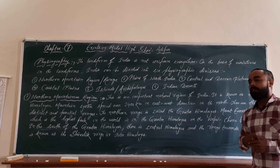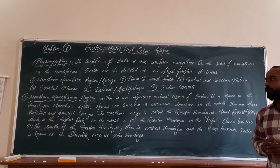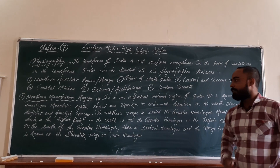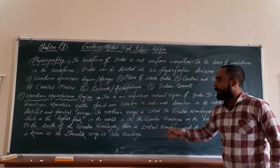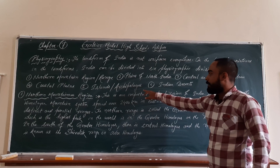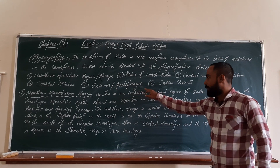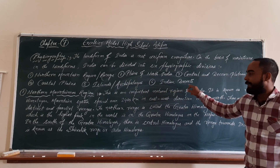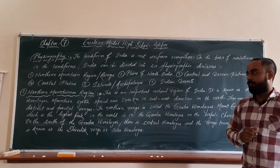Third: Central and Deccan Plateau. Fourth: coastal plains. Fifth: islands or archipelagos. And the last one: Indian deserts.